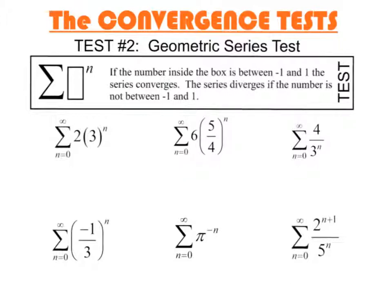The number — what's inside that box — has to be less than positive 1, but greater than negative 1; it can't be equal to 1. So here, we found the common ratio was 3 — this obviously diverges, the common ratio is too big. Here, the common ratio was 5 fourths, so this also diverges.